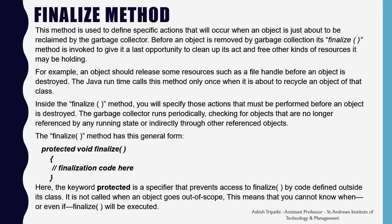The finalize method has the general form: it is always declared as protected and void, using the keyword finalize. Inside finalize, you should mention all the closing and releasing of resources like files, network connections, etc. The keyword protected prevents access to finalize by code defined outside its class. It is not called when an object goes out of scope — you cannot know when or even if finalize will be executed. It is called only when the garbage collector runs.